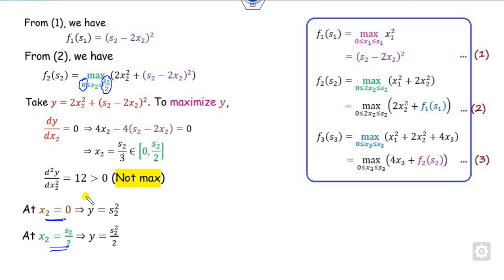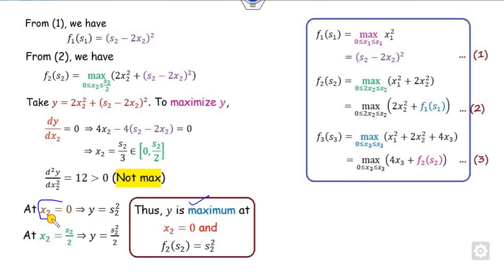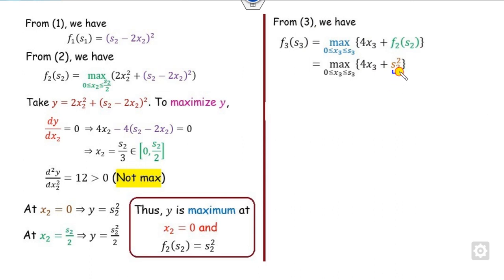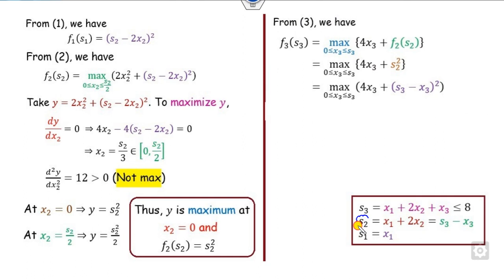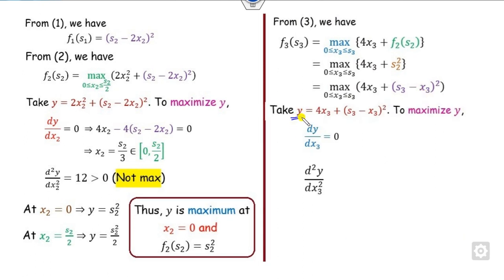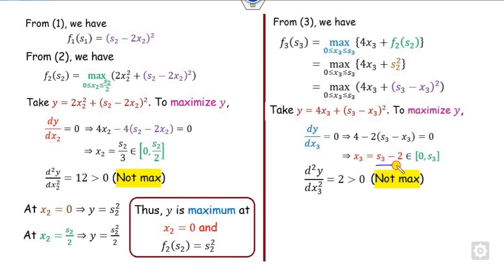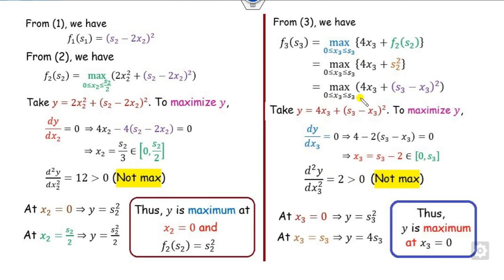Evaluate y at boundary points x2 = 0 and x2 = s2/2. Since the target is maximization, the maximum is identified at x2 = 0, and f(2, s2) equals the corresponding expression. Substituting f(2, s2) into equation 3 and replacing s2 with s3 minus x3, we maximize over the domain. Taking y, first and second derivatives yields two points. The second derivative is greater than 0, so it's not a maximum — evaluate at boundary points only.